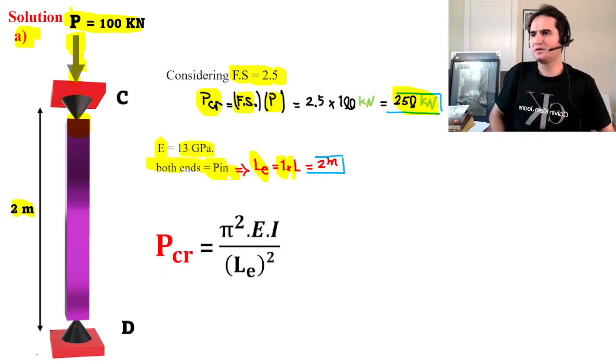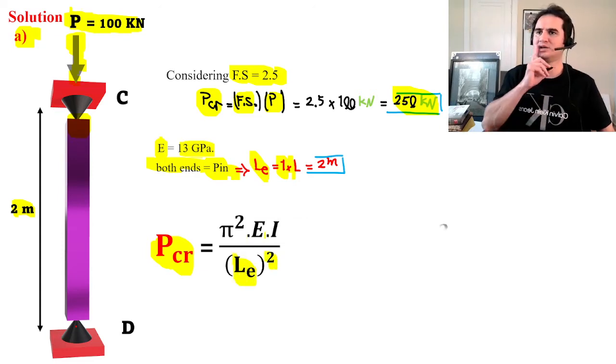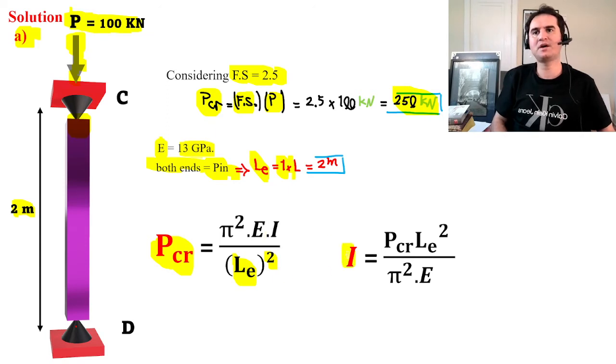We already know the formula of critical load from Euler's method: that's π² times modulus of elasticity times moment of inertia of the cross-section over effective length squared. If we rearrange this equation to get I, that's P_critical times effective length squared over π² times E.